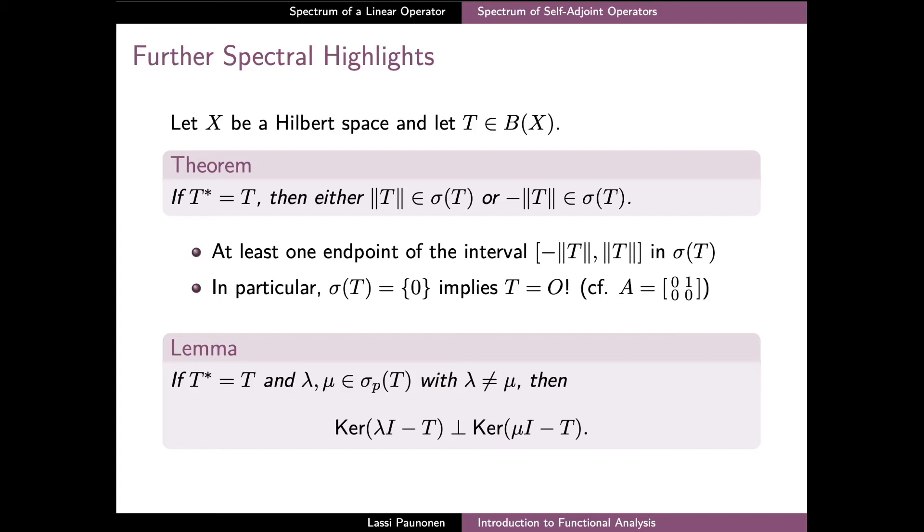Finally, we also note that the eigenvectors of a self-adjoint operator, corresponding to two eigenvalues which are distinct, are always orthogonal with respect to each other.